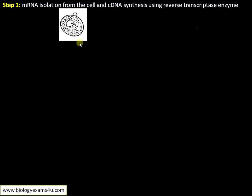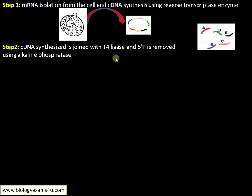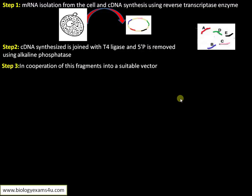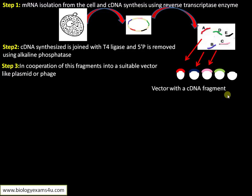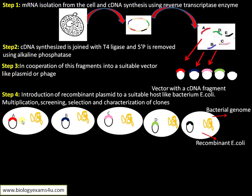Now moving into the steps in the construction of a cDNA library. Step 1: mRNA isolation from the cell and cDNA synthesis using reverse transcriptase enzyme. The cDNA is joined with T4 ligase. We have five genes A, B, C, D, E. Phosphate is removed using alkaline phosphatase, and there are processing mechanisms in between to prevent re-annealing. Step 3: incorporation of this fragment into a suitable vector — we introduce the fragment into a plasmid or phage.